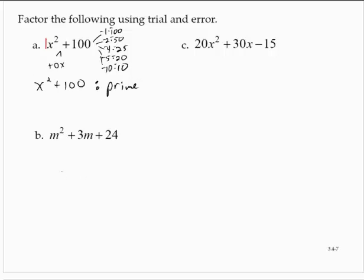m squared plus 3m plus 24. Again, notice that we have a 1m squared. So focusing on the factors of 24: 1 and 24, 2 and 12, 3 and 8, 4 and 6.